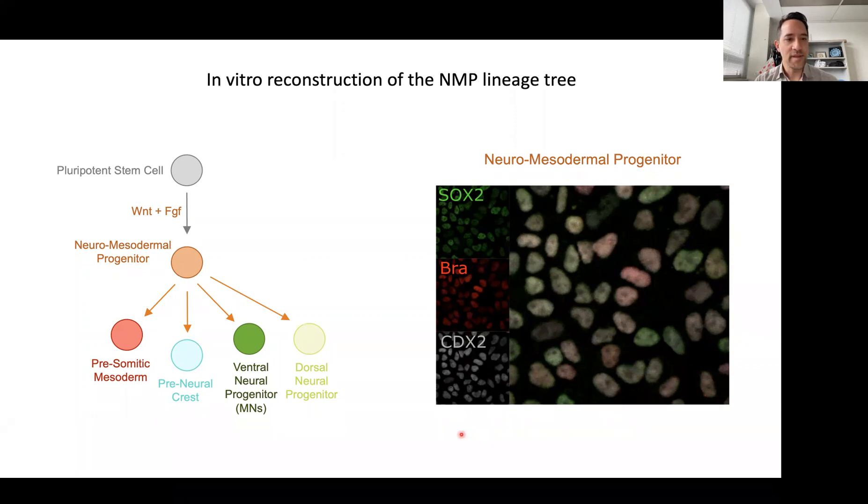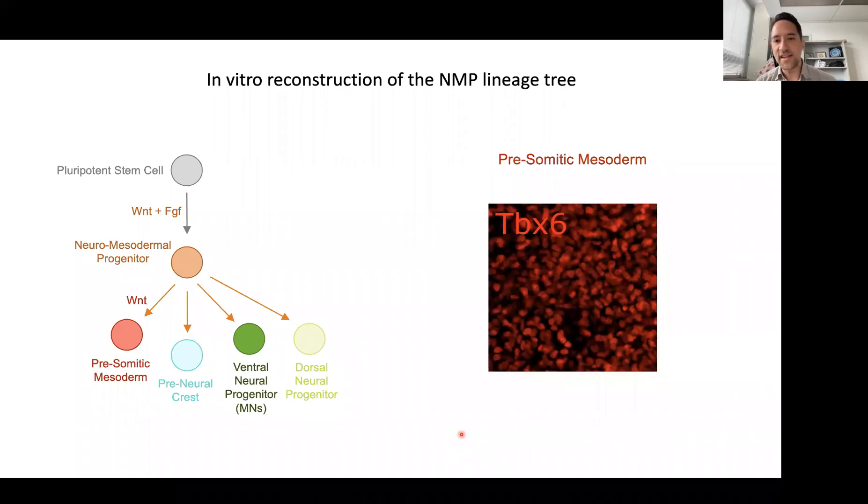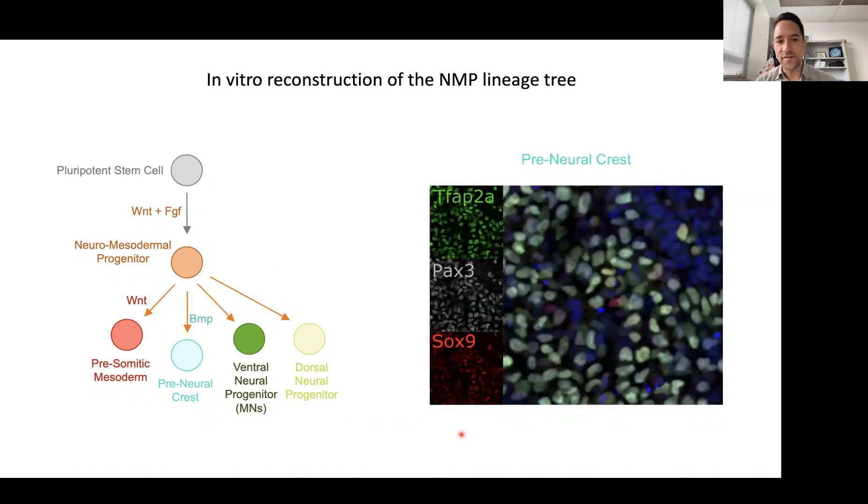From these NMPs, we can then modulate Wnt signaling and derive TBX6 positive pre-somitic mesoderm cells. Alternatively, we can use BMP to derive pre-neural crest cells.